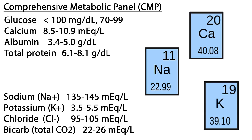Sodium is mainly found in extracellular fluid, where it helps regulate the amount of water in the body; the normal range is 135 to 145 milliequivalents per liter. Potassium is mainly found inside the body's cells, with a small portion in the plasma. Small changes in the potassium level can affect the heart's rhythm and ability to contract; normal range is 3.5 to 5.5 milliequivalents per liter.